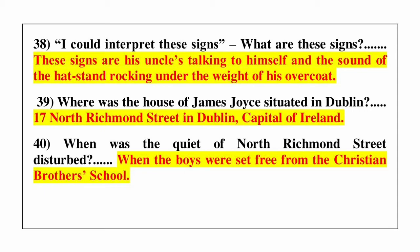Question number 39: where was the house of James Joyce situated in Dublin? Answer is 17 North Richmond Street in Dublin, capital of Ireland. Next question: when was the quiet of North Richmond Street disturbed? Answer is when the boys were set free from the Christian Brothers School.